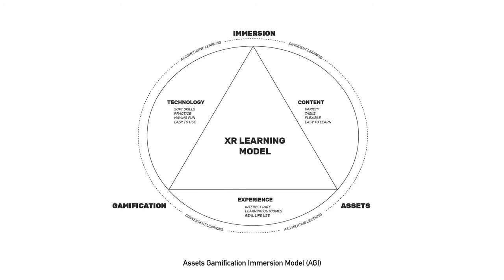Immersion is usually defined as the degree of involvement with something. Brown and Cairns identify three levels of immersion in games. The first is engagement, when the interest and desire to keep playing is sufficient to justify the time and effort needed to learn how to play. The second level is engrossment, a feeling of emotional attachment that makes people want to keep playing. The third level is total immersion, a state in which players are cut off from reality and the game is the only thing that matters. The relationship of distance learning with students' environment will be more effective with virtually created or enriched spaces, where immersion takes place as cognitive isolation from reality.